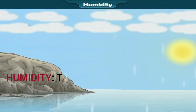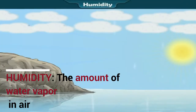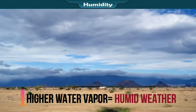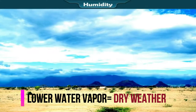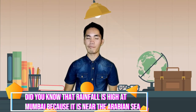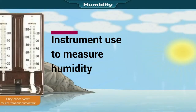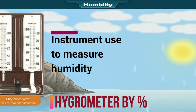Water vapor is always present in the atmosphere, and this amount of water vapor is called humidity. The moistness or dryness of the air depends upon atmospheric humidity. Weather is said to be humid when the water vapor content in the air is higher, and dry when the water vapor content is lower. Rainfall depends on the level of atmospheric humidity. Did you know that rainfall is high in Mumbai because it is near the Arabian Sea? The instrument used to measure humidity is a dry and wet bulb thermometer called a hygrometer, and it is given in percentage form.